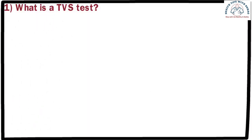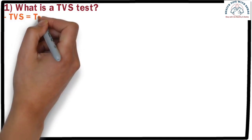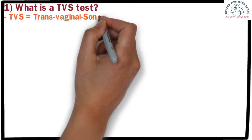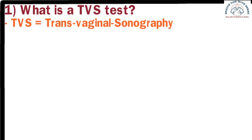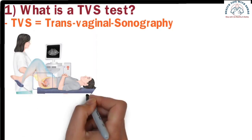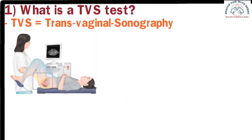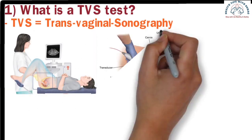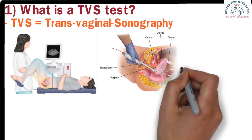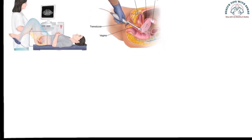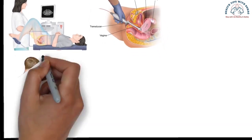What is a TVS test? The full form of TVS is trans-vaginal sonography. Trans-vaginal means through the vaginal route. In simple terms, TVS is a special type of ultrasound that is performed by inserting an ultrasound probe inside the vagina.